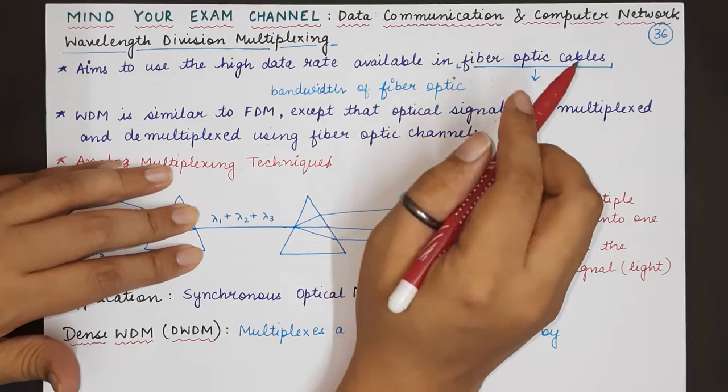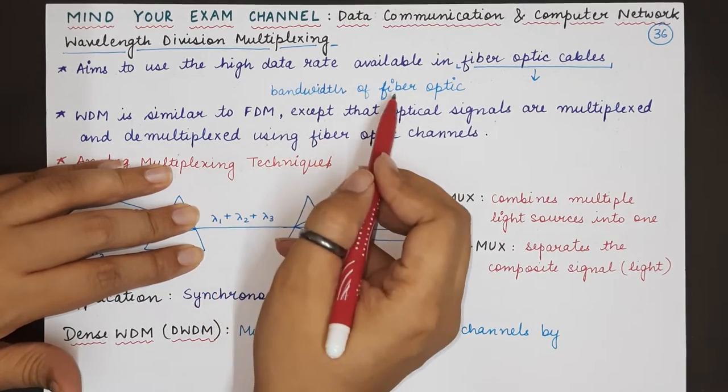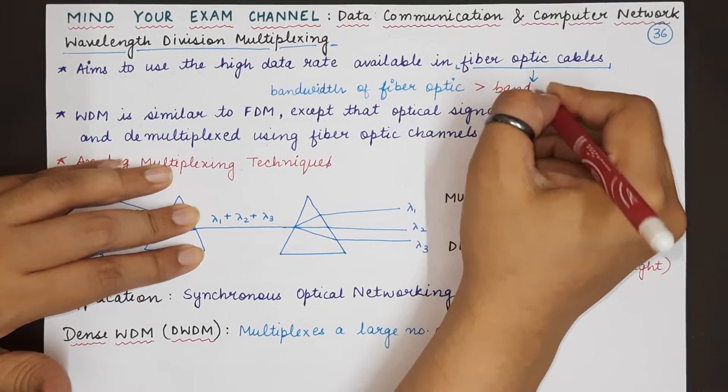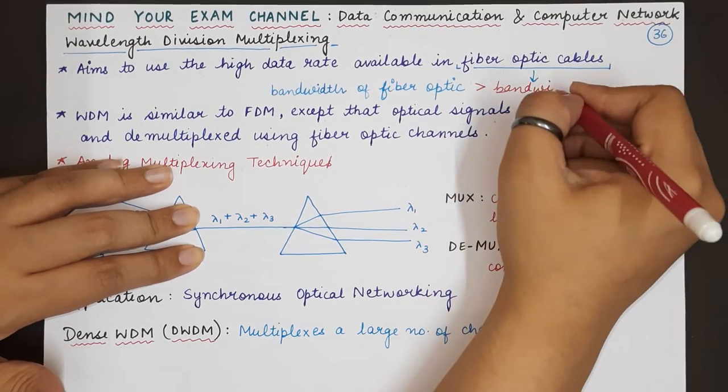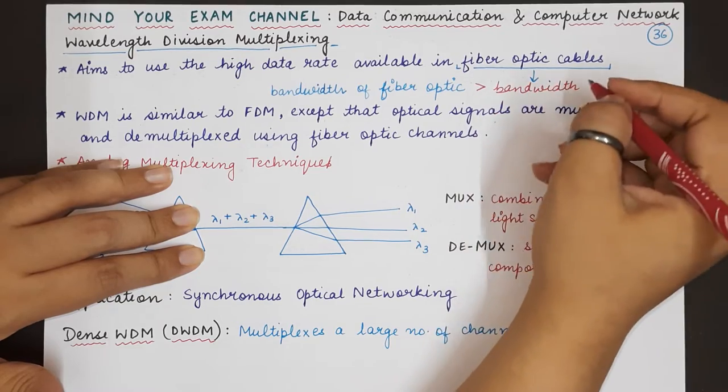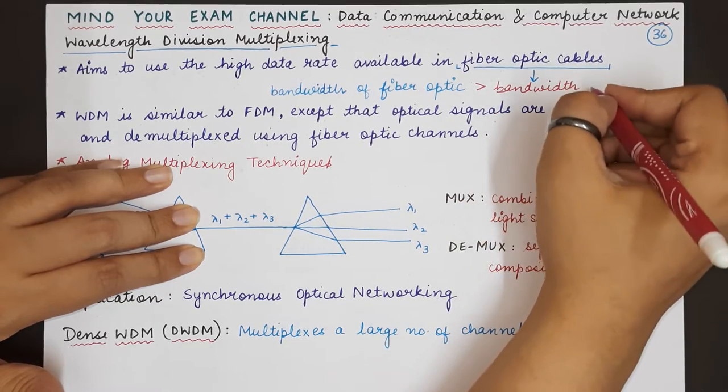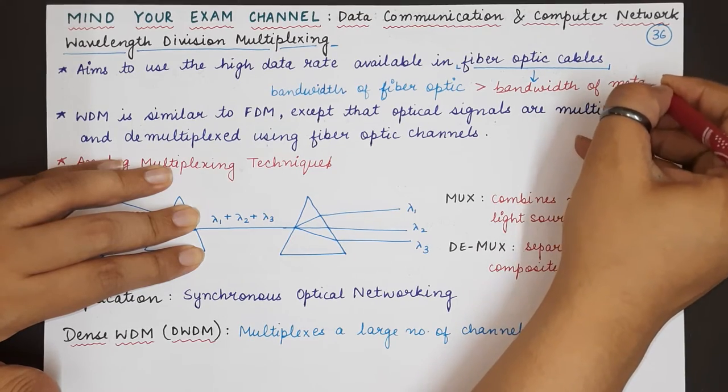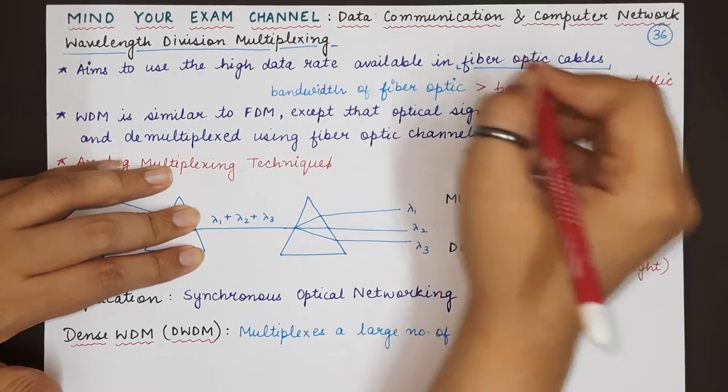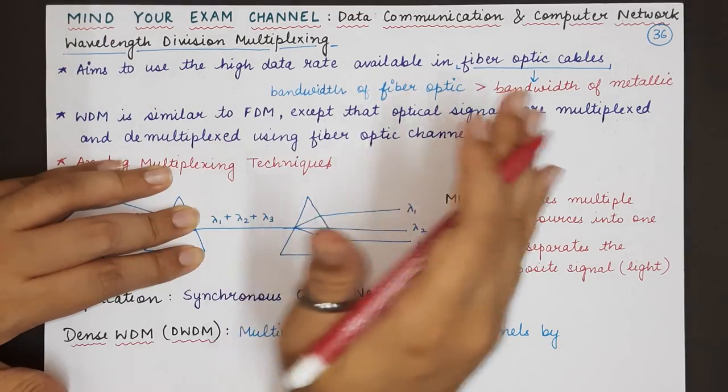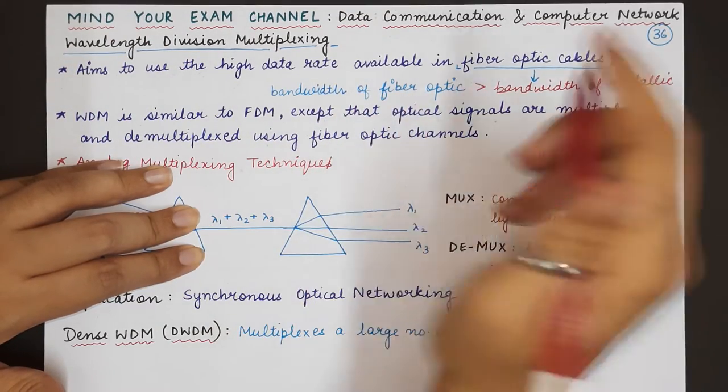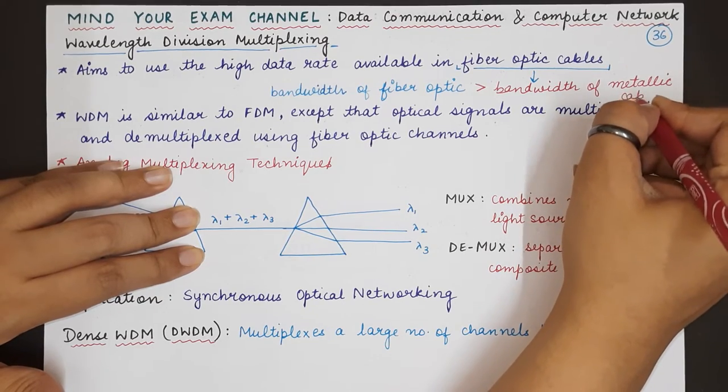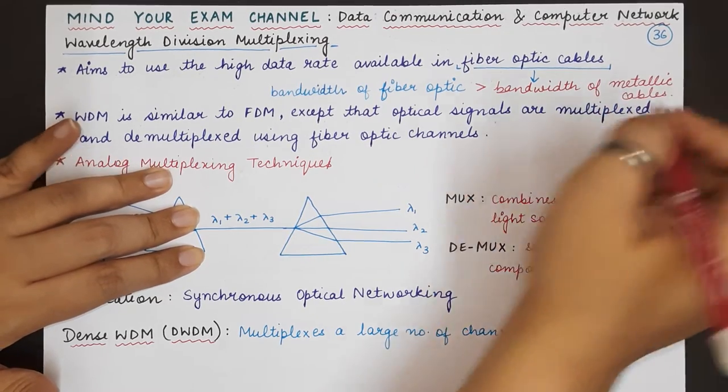Now you must understand that the bandwidth of a fiber optic cable is always greater than the bandwidth that is available for metallic cables like the twisted pair or coaxial cables. So that is why it is very important and that is why this is a dedicated multiplexing technique for utilizing fiber optic cables and their bandwidth conveniently and correctly.